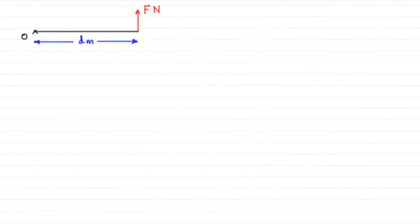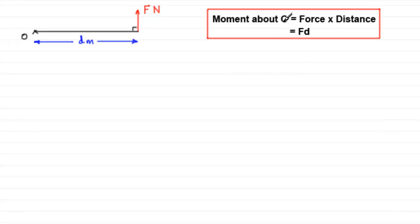Hi. Now you may remember that in the past we've talked about the moment of a force, F newtons, about a point O. And if that force of F newtons was applied perpendicularly to the point O at a distance d meters from it, then the moment of that force about O was equal to the force multiplied by the distance. In other words, F times d.